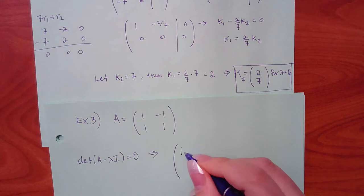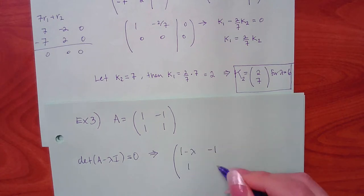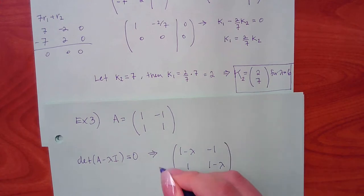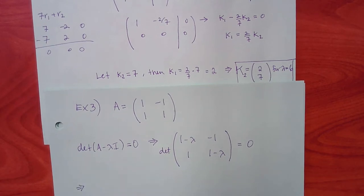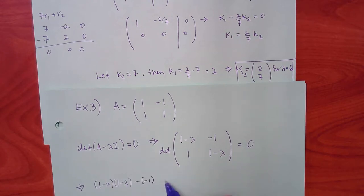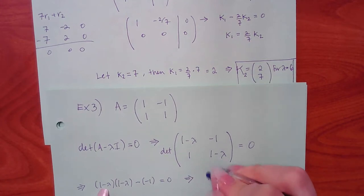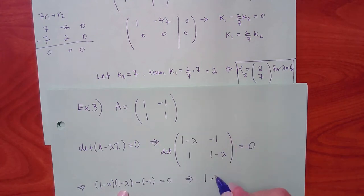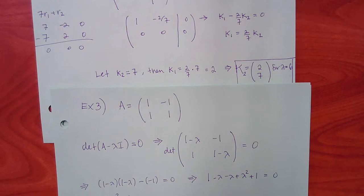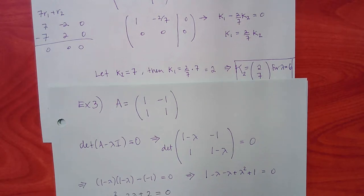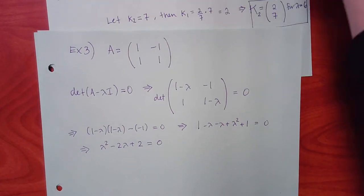Taking the determinant and setting equal to zero: (1 minus lambda)(1 minus lambda) minus the off-diagonal product. Expanding: 1 minus lambda minus lambda plus lambda squared plus 1, giving lambda squared minus 2 lambda plus 2.